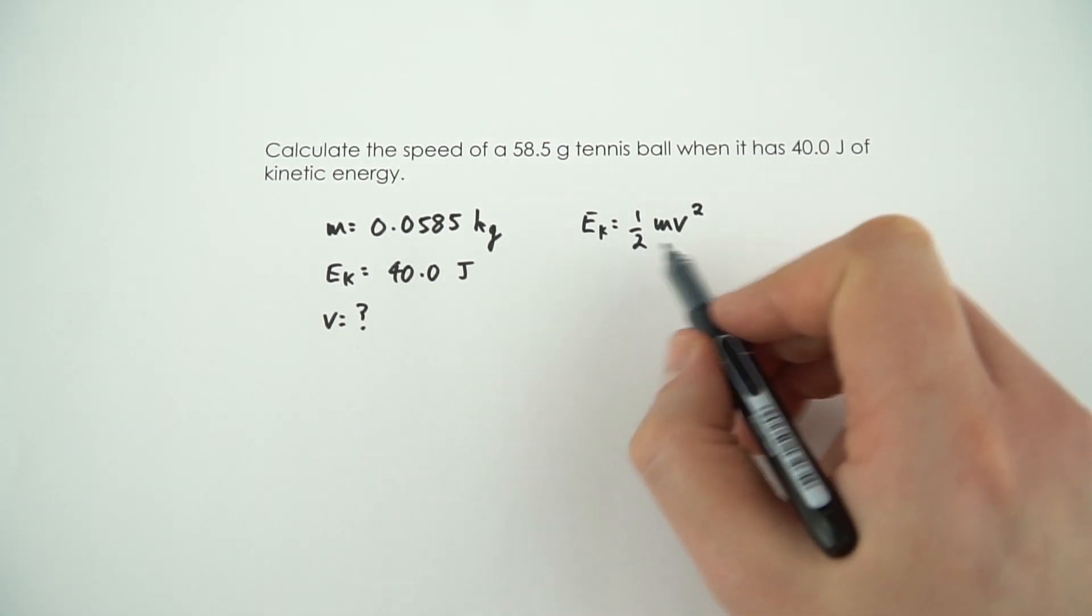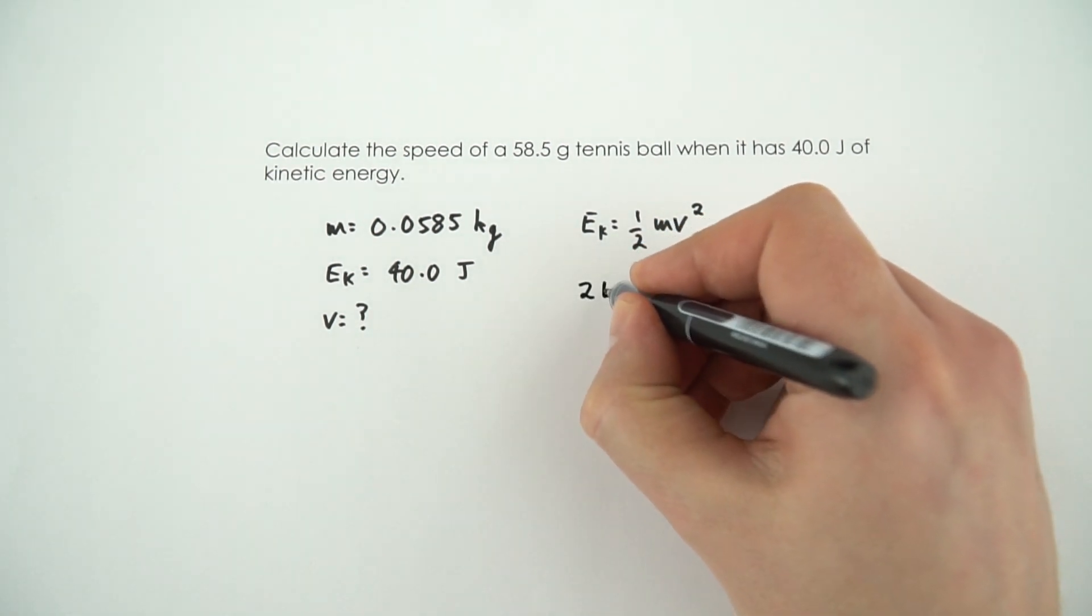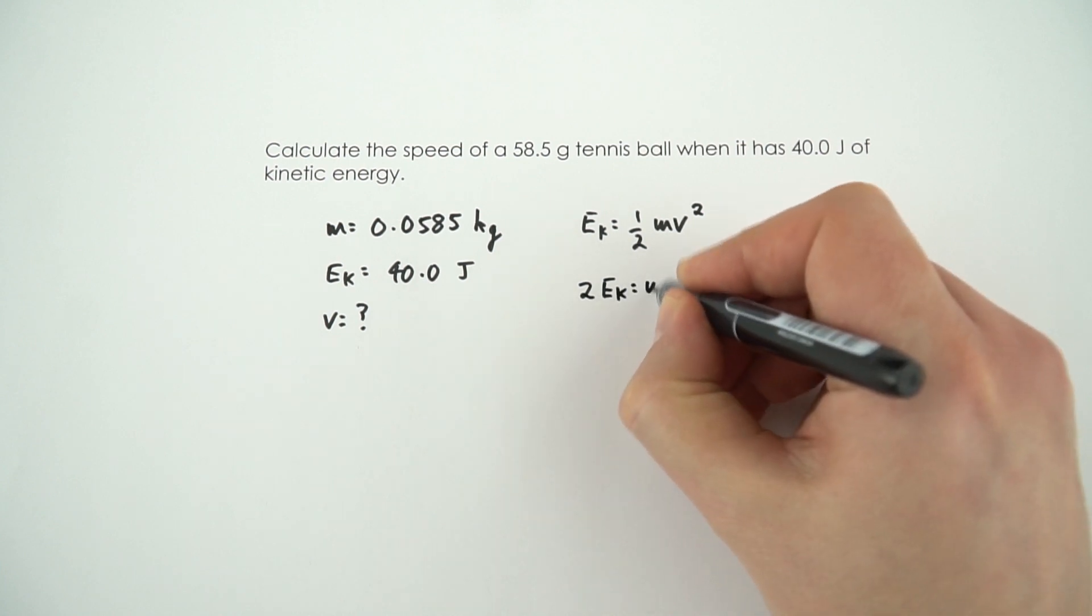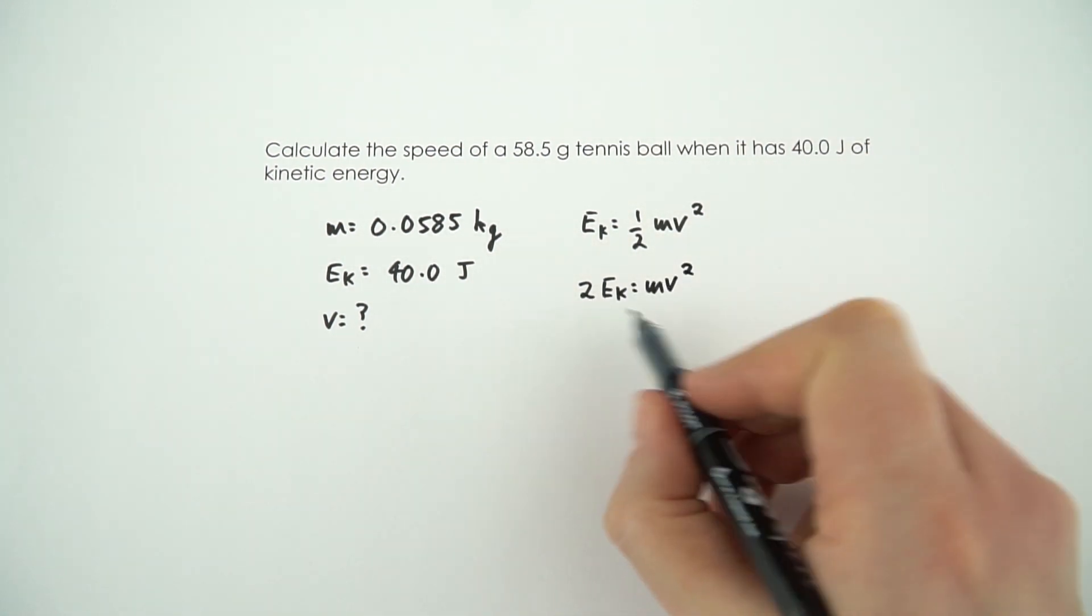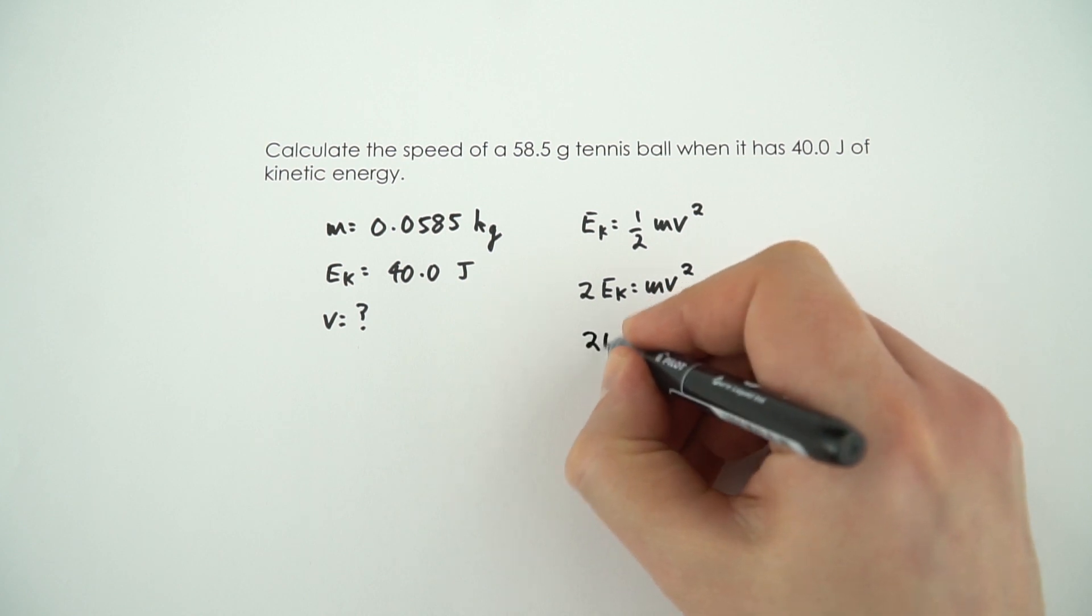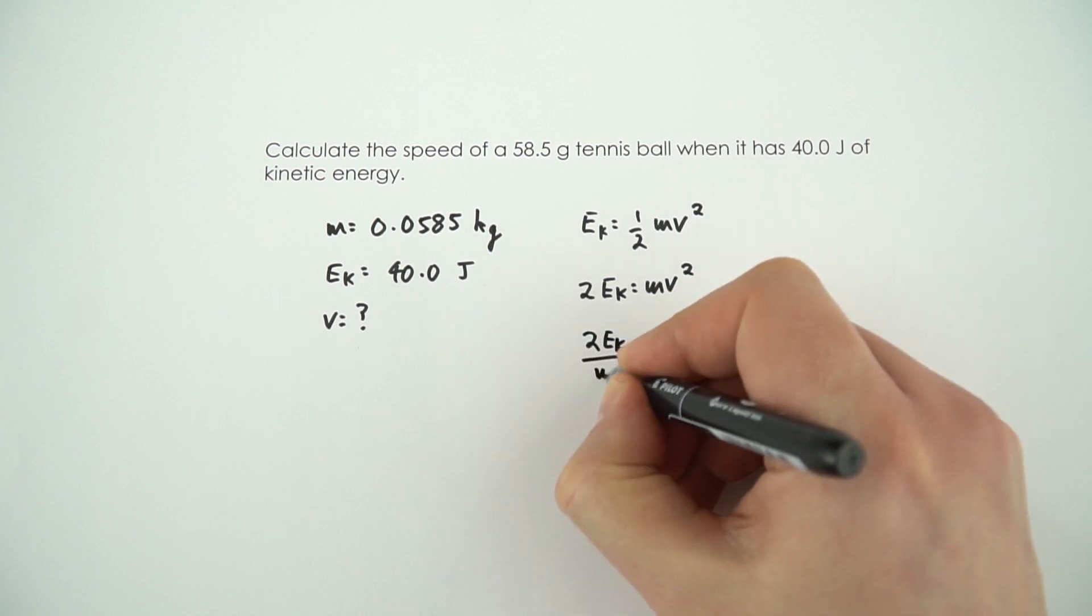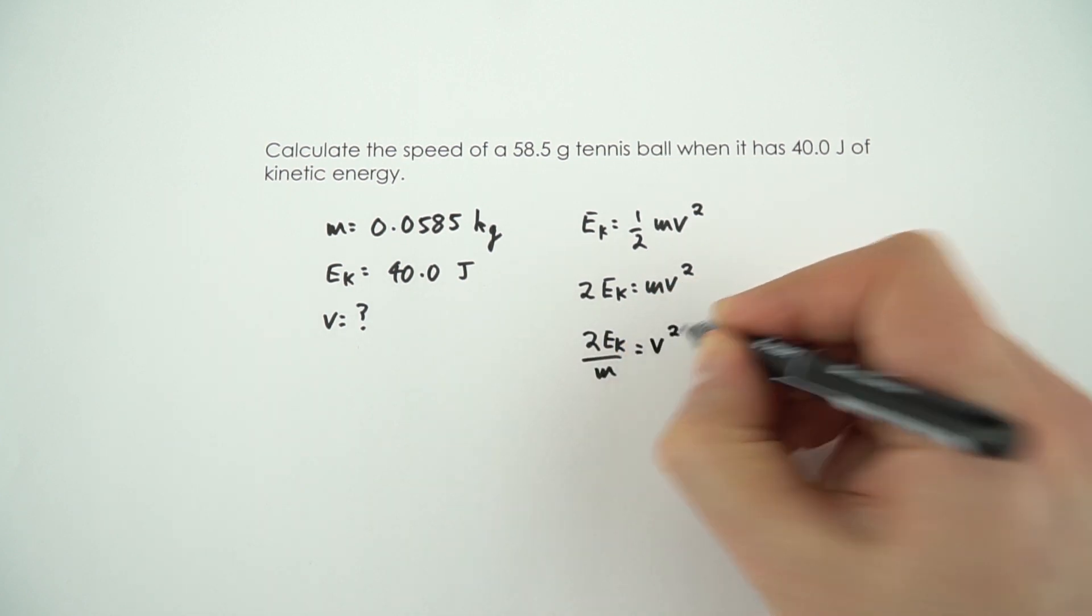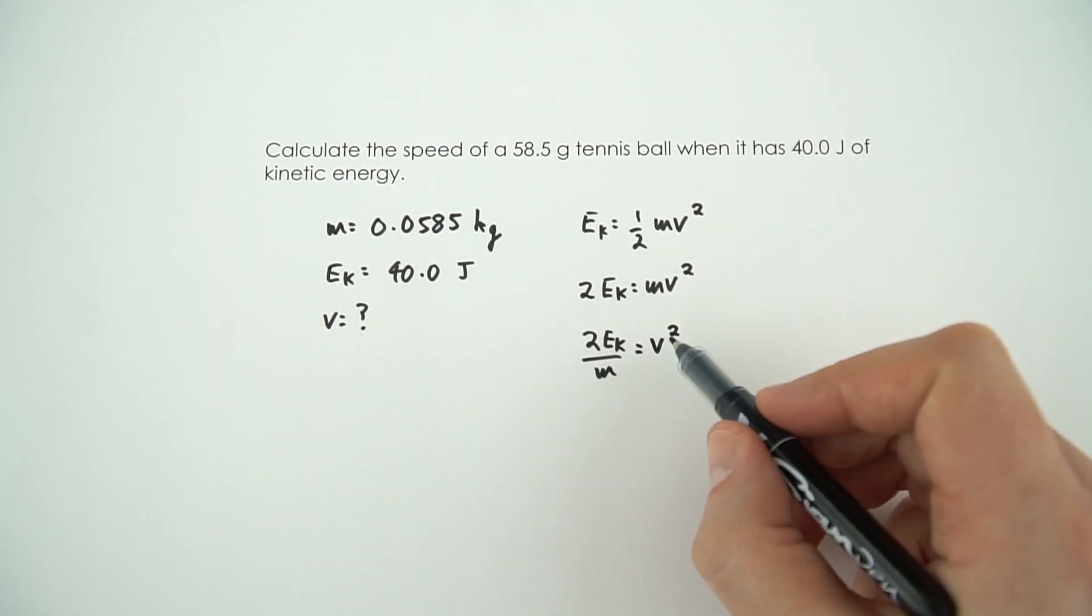So I'm going to do this by multiplying both sides by 2 to say that 2Ek is equal to mv squared. I then need to divide by m. So 2Ek over m is equal to v squared. And then I need to square root both sides.